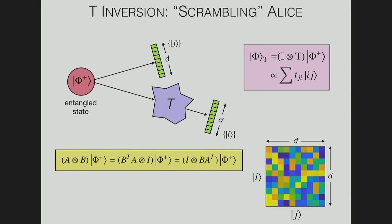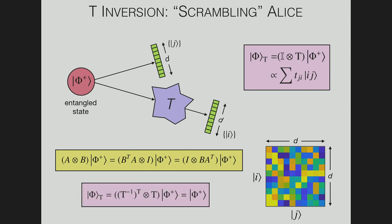There's an interesting property of maximally entangled states: you can move an operation on one particle onto the other particle or vice versa. Specifically, A⊗B can be written as B^transpose ⊗A or I⊗BA^transpose acting on the maximally entangled state. What this allows us to do is, instead of unscrambling Bob, you can scramble Alice and recover your state. Even though Bob's photon went through a scrambling channel T, you can put a scrambling operation on Alice and get back your entanglement. This is a unique feature — the entanglement doesn't actually go away, it's just rotated.